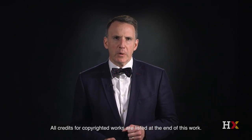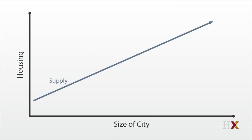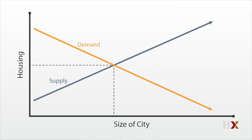In this video, we explore what agglomeration economies can mean for city size. If the agglomeration economies just cause demand to slope down a little less, then everything is normal. Demand slopes down, supply slopes up, and there is a single crossing point that determines housing prices and city size.